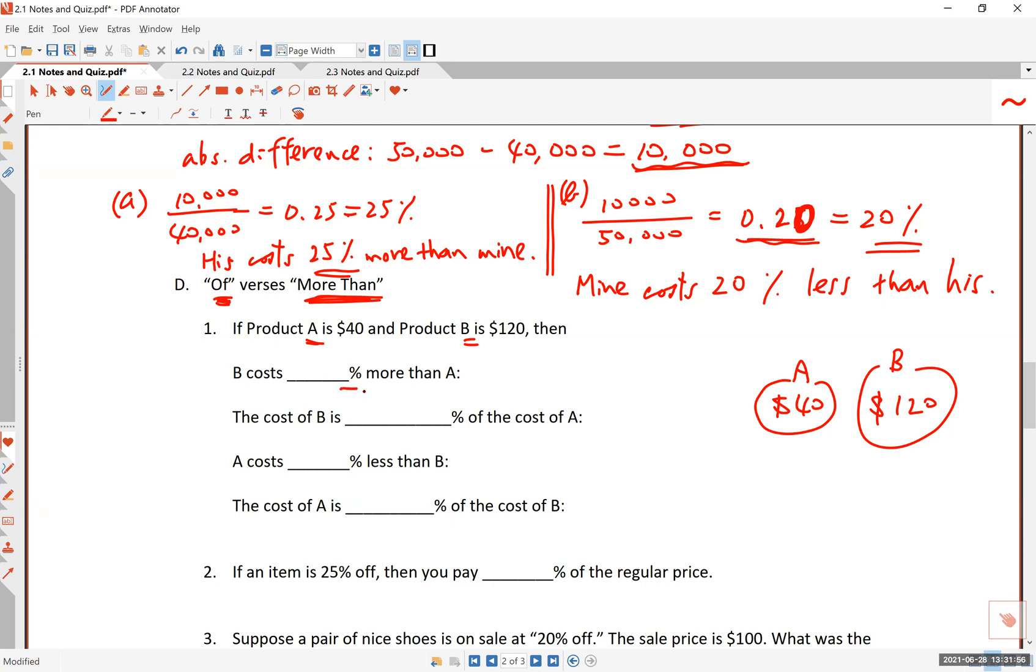Now B costs what percent more than A? Let's see the difference is, of course, $80, right? There's an $80 difference. This is called the absolute difference. And absolutely, this is right. In other words, B costs $80 more than A. And that number is absolute. It doesn't matter what the reference point is. The difference is clearly $80. But then when you talk about percentages, because percentage is a relative notion, that percentage depends on what the base number is. That base, the reference is what makes this relative.